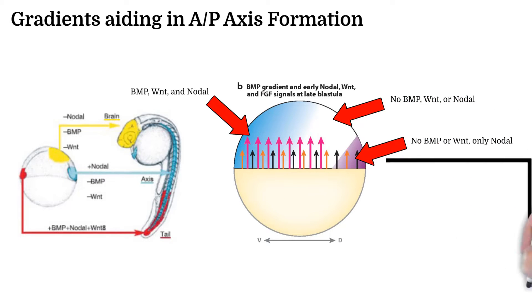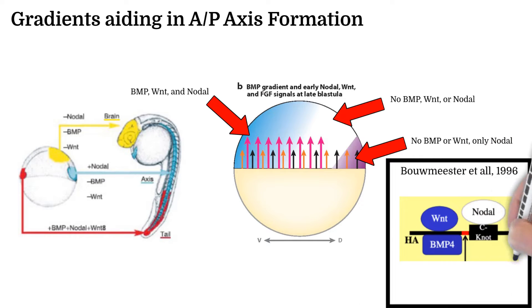The relationships between these concentration areas and the resulting position along the anterior posterior axis was helped by studies such as Baumeister's in 1996, where they discovered a protein called Cerberus that attached to all three of nodal, Wnt, and BMP. This protein, when injected into a different part of the embryo, ended up creating an additional ectopic head on the resulting embryo, showing that taking all three of these proteins out of the system will create an additional head.